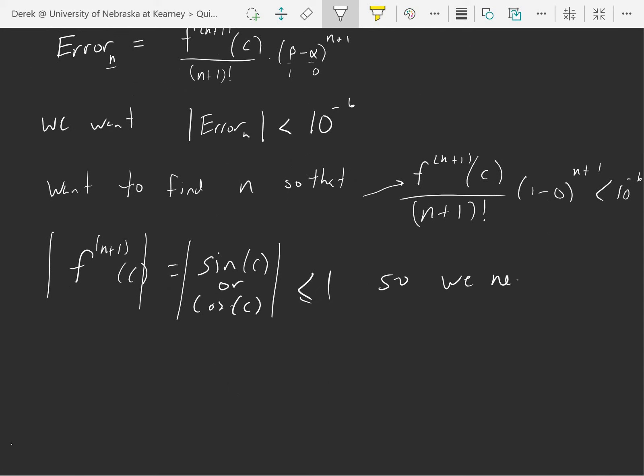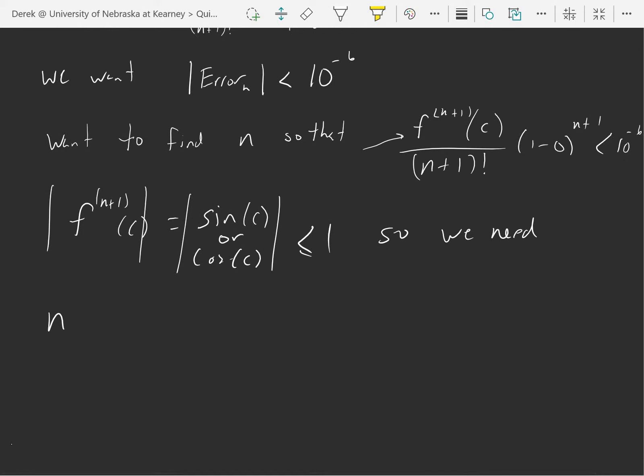So we need n such that 1, if I make this as big as possible, that would tell me the biggest that the error could possibly be. If I make that as big as possible and it's still less than 10 to the 6th, then we're going to be good.